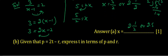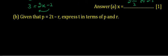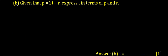Move to part b. It is given that p equals 2t minus r. Express t in terms of p and r. Actually the subject is p right now, p equals 2t minus r, and we have to express t. We have to make t the subject of the formula.